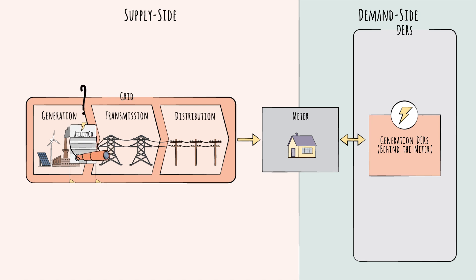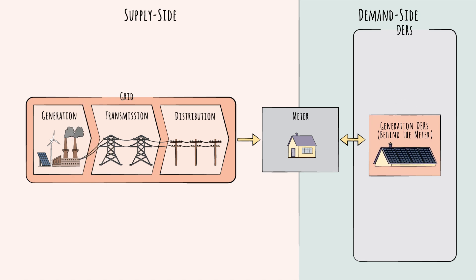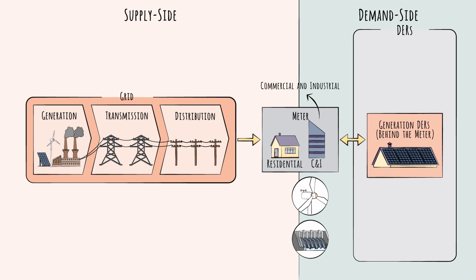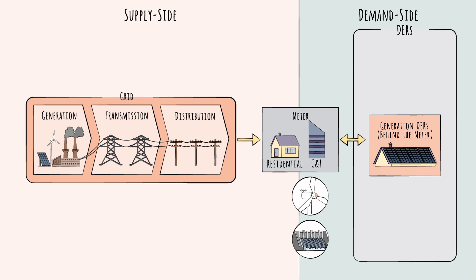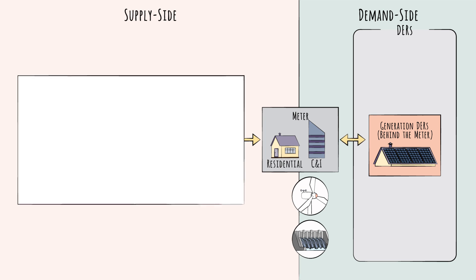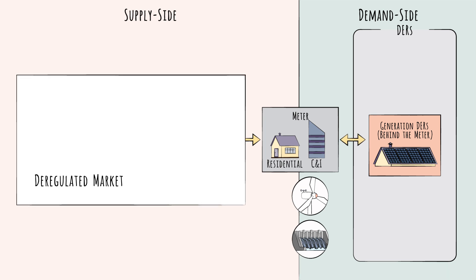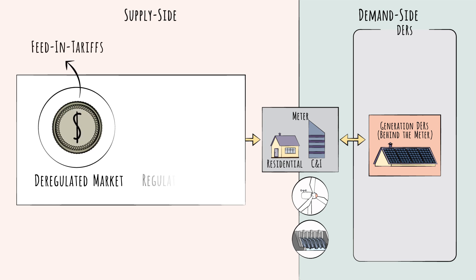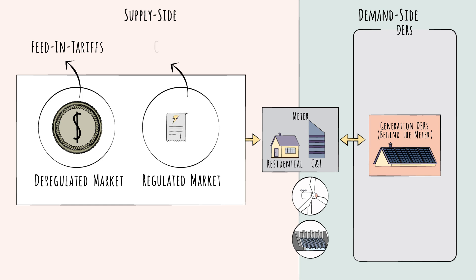The biggest and fastest-growing example is rooftop solar. Other renewables can be used in this way as well, such as small wind turbines or small hydropower systems, but these are larger systems and better suited for commercial and industrial customers – also known as C&I customers. In most markets, surplus power generated from behind the meter can flow in the reverse direction – back onto the grid – for a price. In deregulated markets, customers can be paid via feed-in tariffs for their power generation. In regulated markets, they can usually get a credit on their bill.